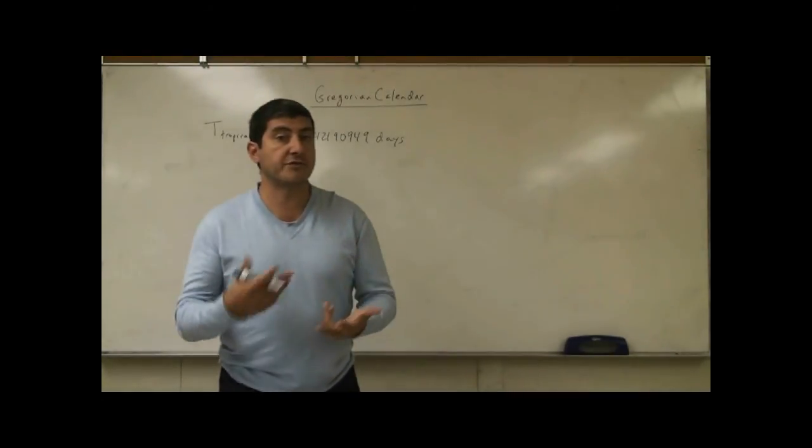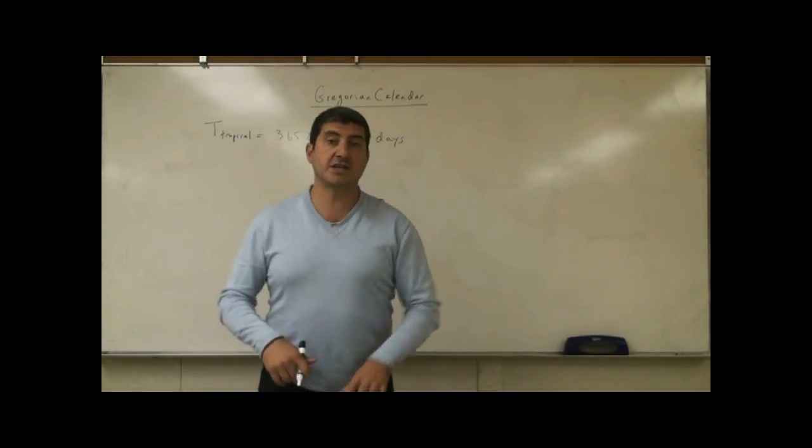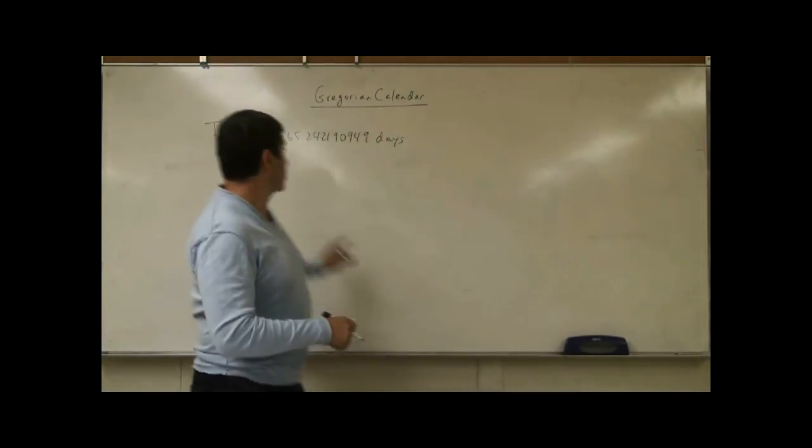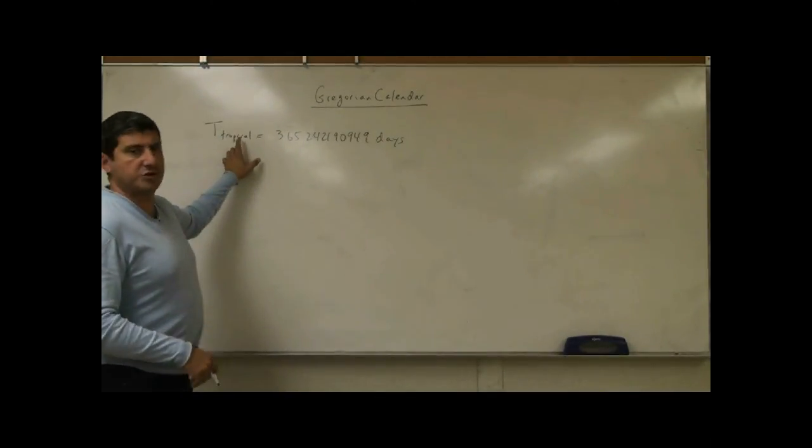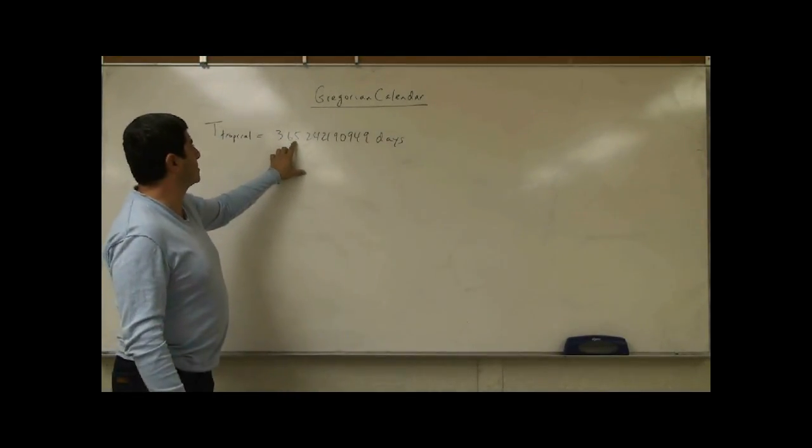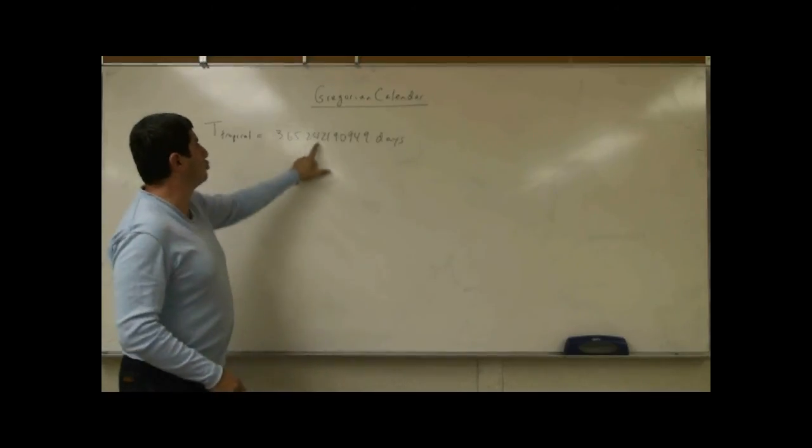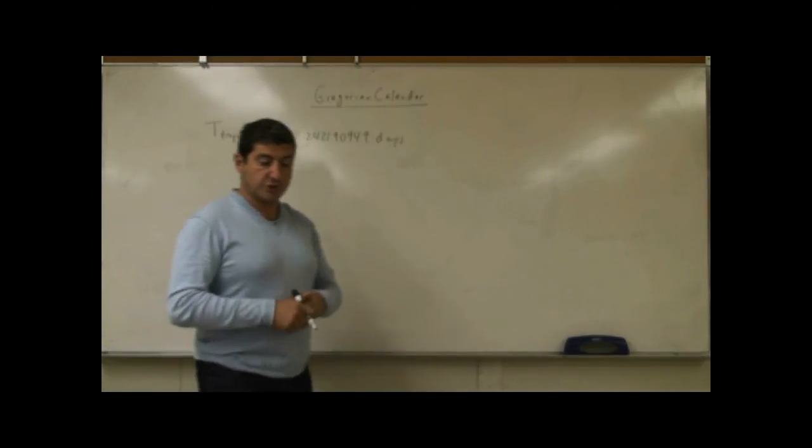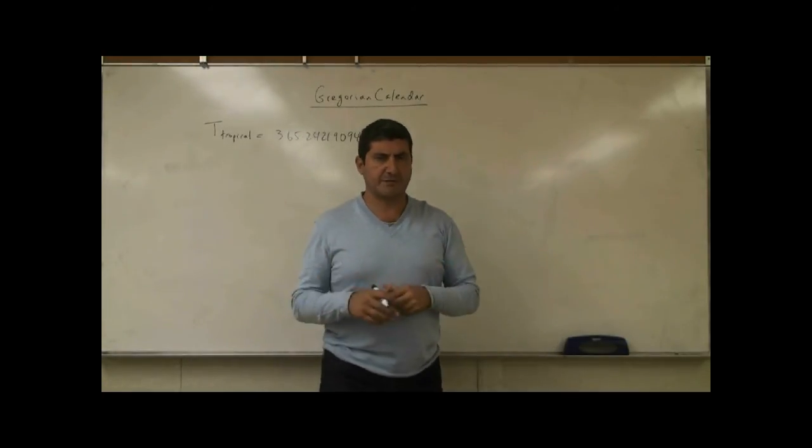Now I'm going to explain to you the origin of the Gregorian calendar, what the idea behind it is, and where it comes from. So we just saw in the previous video that the tropical year occurs every 365.24 days. So where does the Gregorian calendar concept come from?